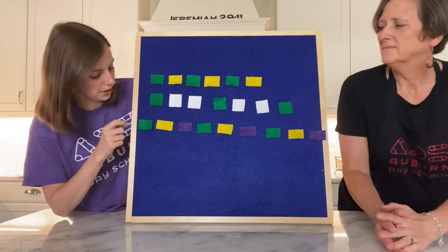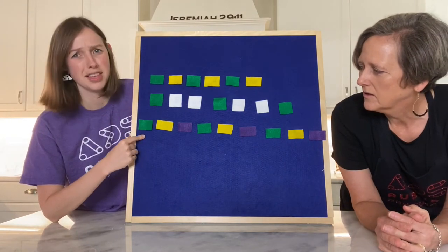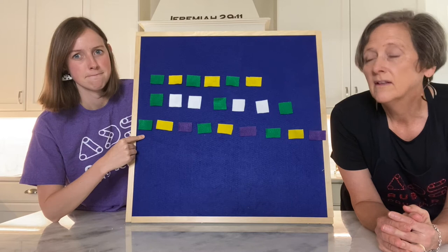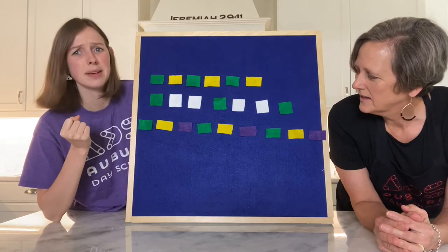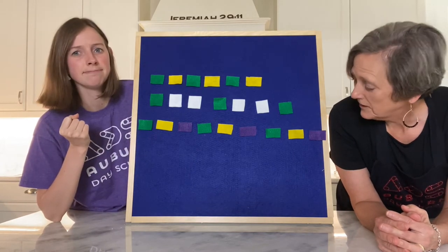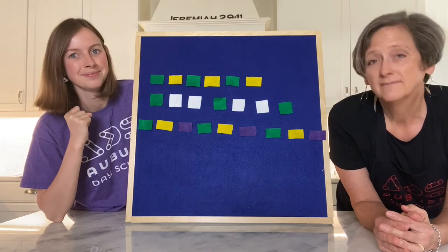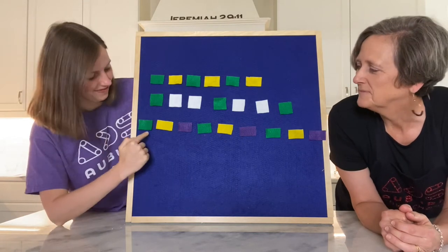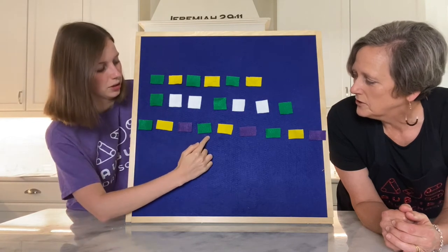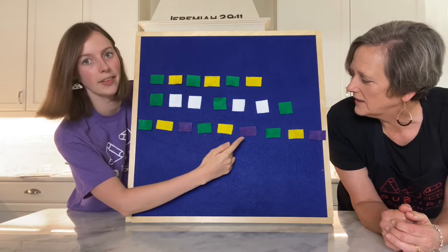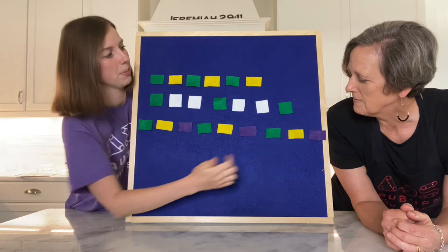One more pattern on the bottom. Back to rectangles again, same size. So what's different? The color. Green, yellow, purple. Green, yellow, purple, repeat. Green, yellow, purple, repeat.